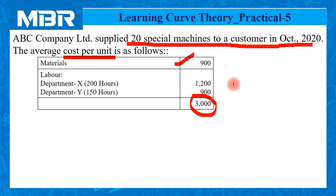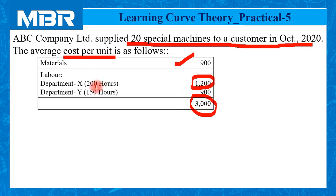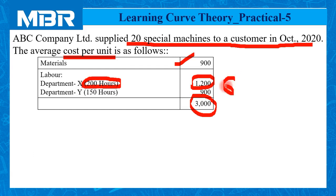In this question, the rate of labor per hour is not given, but we can easily calculate it with the help of the given information. Labor cost for Department X is Rs. 1,200, and the number of working hours employed in Department X is 200. So 1,200 divided by 200 — the rate of labor for Department X is Rs. 6.